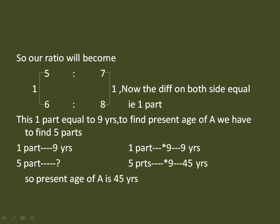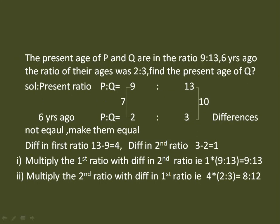Next problem: the present ages of P and Q are in the ratio 9:13. Six years ago the ratio of their ages was 2:3. Find the present age of Q. Note that 'ago' means before — six years ago means six years back.